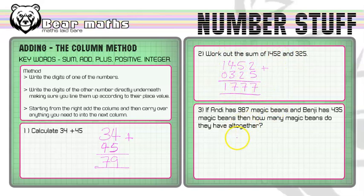In question 3, we have a word problem. Andy has 987 magic beans and Benji has 435 magic beans. We need to work out how many magic beans they have altogether. This requires us to add together the amount of magic beans each person has. Let's write them down and follow the same method.